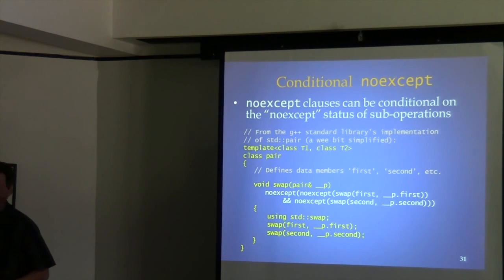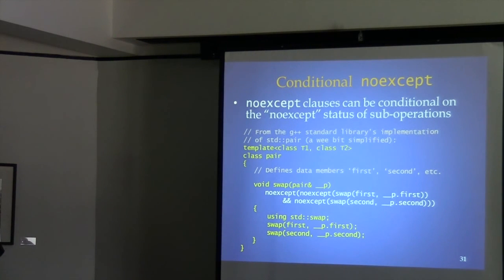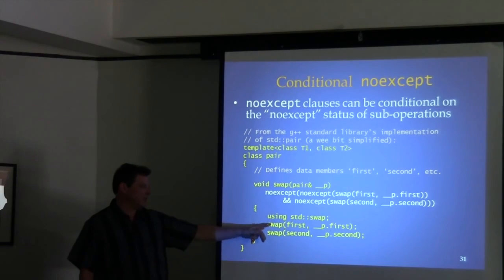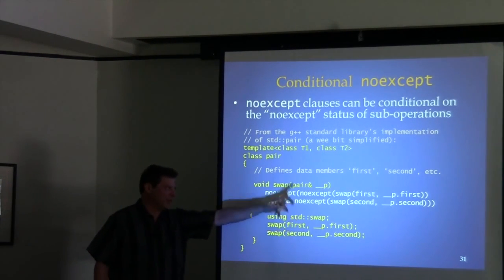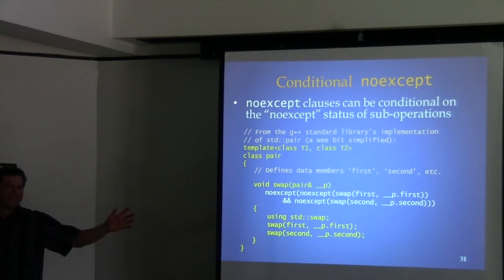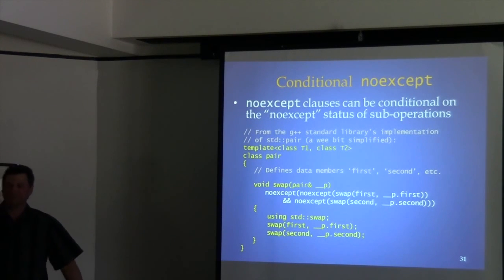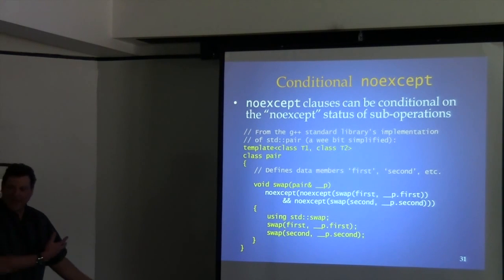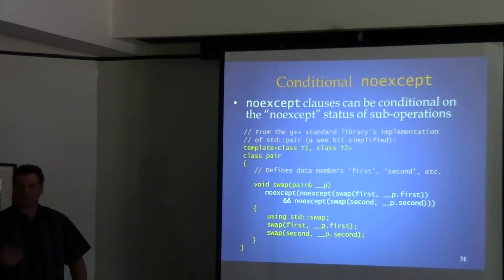Question about the swap inside the noexcept expression — which swap does it refer to? It's really beyond me to answer that off the top of my head. There's definitely an answer involving ADL in these decorators, and I'd need to think it through. This is an overview, not a deep dive — good question, come see me after.